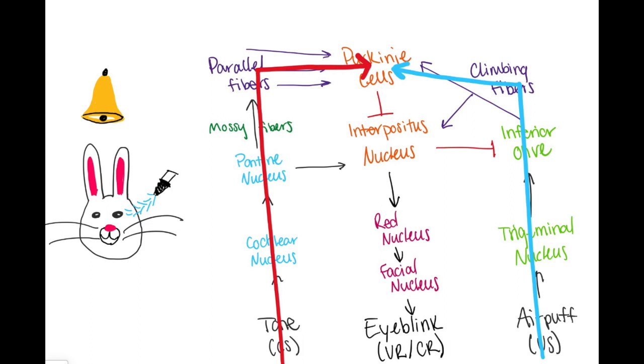The weak CS marks AMPA receptors in the Purkinje cells, which are then destroyed by the strong US. The Purkinje cells now have fewer AMPA receptors and exhibit LTD. The tone alone can now elicit the eye blink.